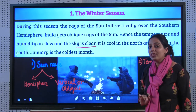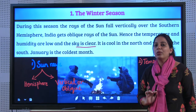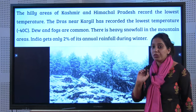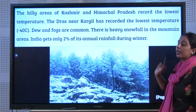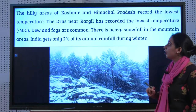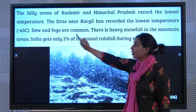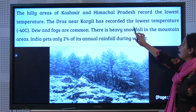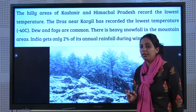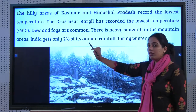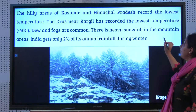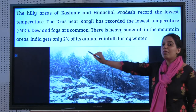January is the coldest month. The hilly areas of Kashmir and Himachal Pradesh record the lowest temperatures. In particular, Drass near Kargil has recorded the lowest temperature of minus 40 degrees Celsius. Dew is common, fog is common, and there is heavy snowfall in the mountain areas.